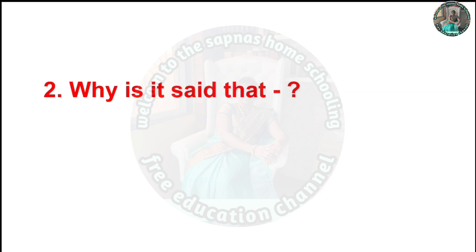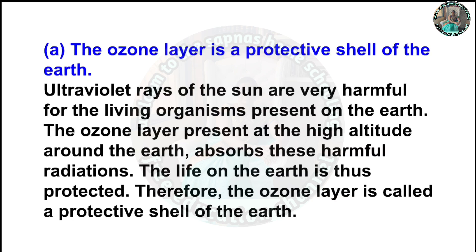Second question: Why is it said that the ozone layer is the protective shell of the earth? Answer: The ultraviolet rays of the sun are very harmful for the living organisms present on the earth. The ozone layer present at the high altitude around the earth absorbs this harmful radiation. The life on earth is thus protected; therefore the ozone layer is called a protective shell of the earth.